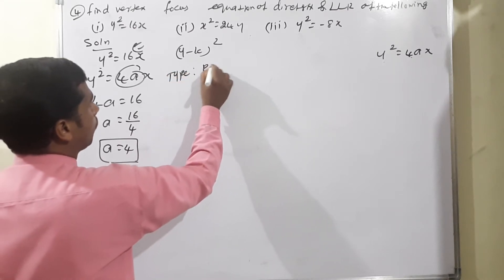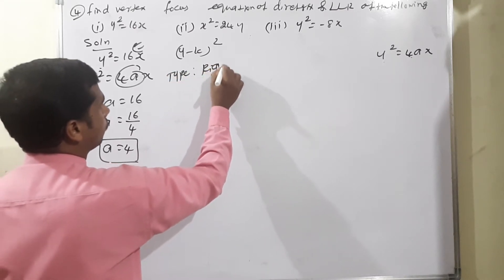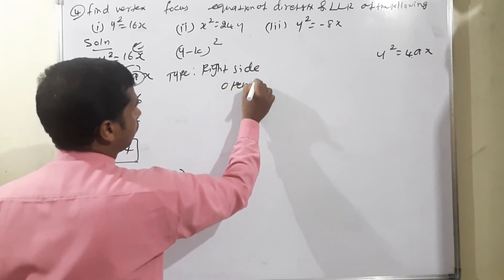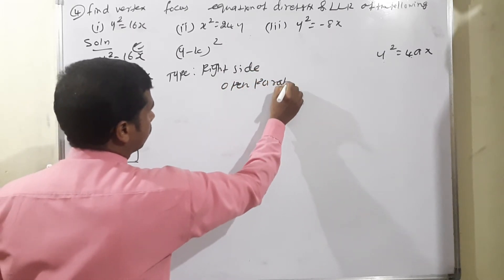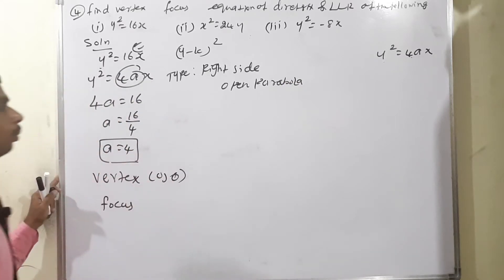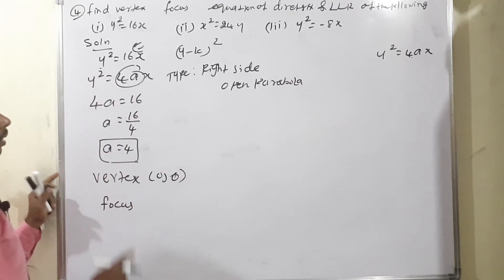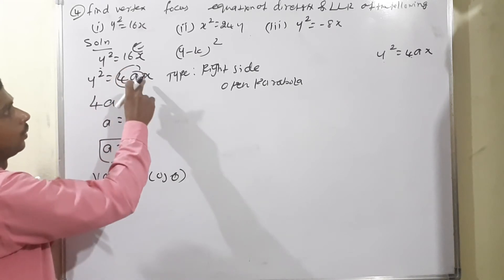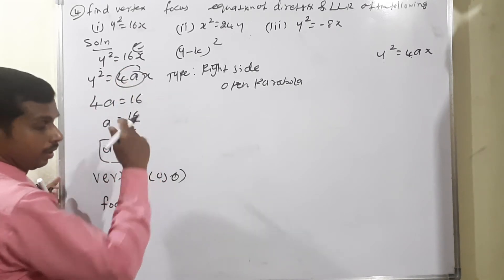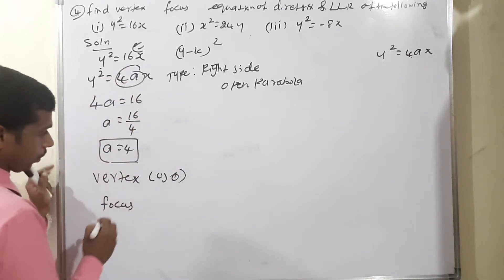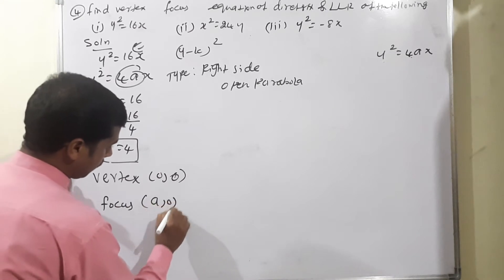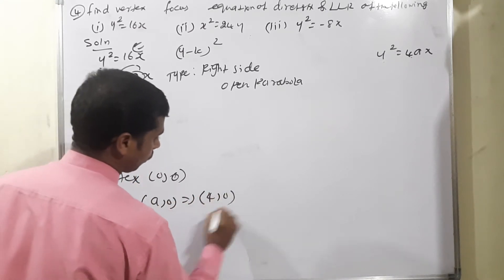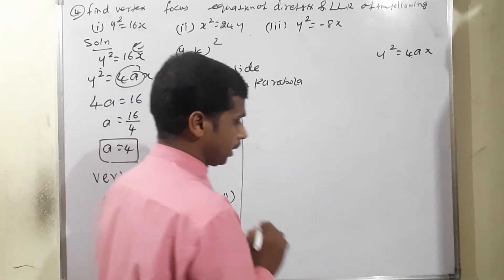This is a right side open parabola. For right side open parabola, focus is at (a, 0). Since a = 4, focus is at (4, 0).